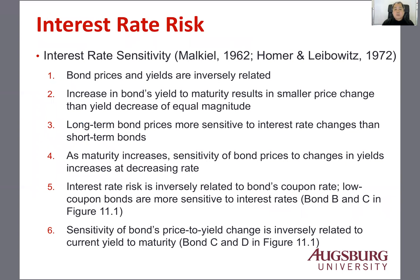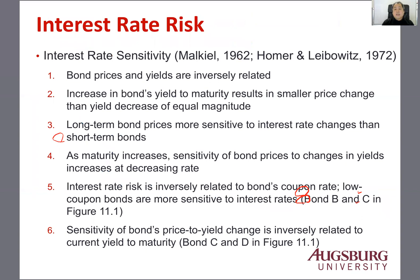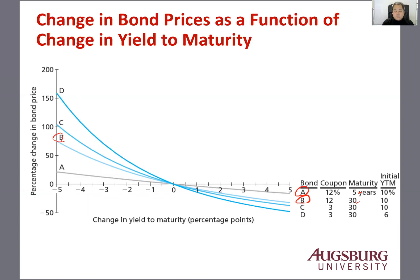Number four: as maturity increases, the sensitivity of bond prices to changes in yield increases, but at a decreasing rate. Consider two bonds, say A and B, that are exactly the same except in maturity. Sensitivity is higher for B, but this sensitivity increases at a decreasing rate. So if you compare a five-year bond to a six-year bond versus a 29-year bond to a 30-year bond, the sensitivity changes are greater for the shorter-term bonds.